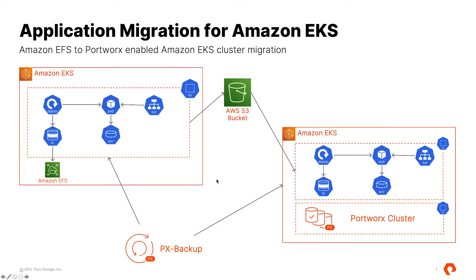My name is Bhavan Shah and in this demo we'll see how you can leverage PX Backup from Portworx to back up applications running on an Amazon EKS cluster backed by Amazon EFS shared file system using read-write-many persistent volumes, and restore to a Portworx-enabled Amazon EKS cluster. We're using a simple Jenkins deployment and will store the snapshot in an S3 repository.